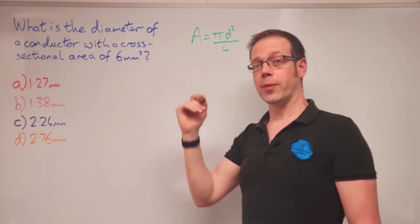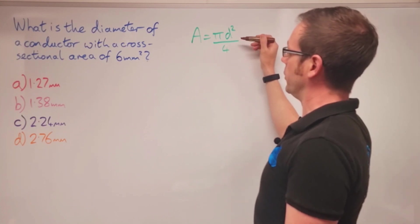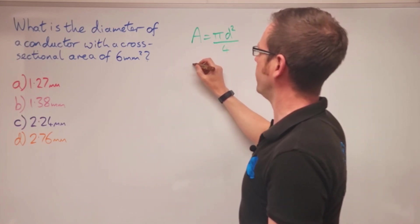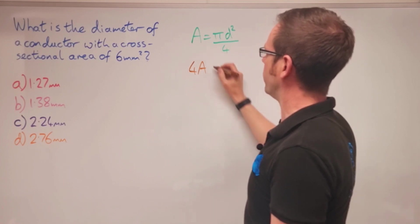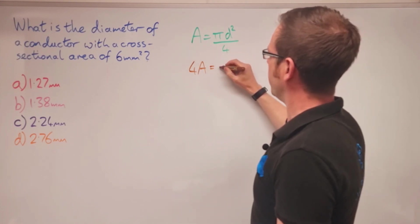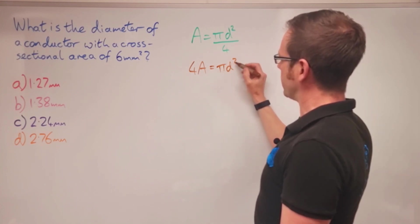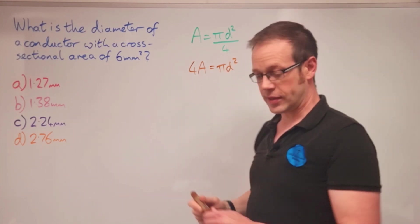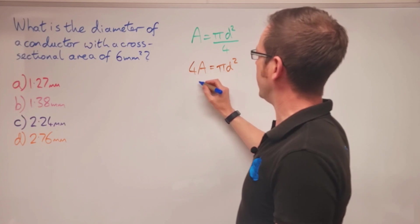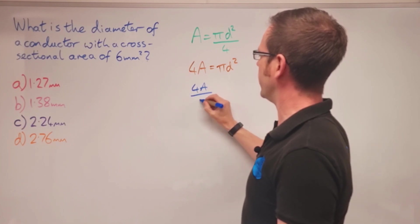Instead of dividing by four, we multiply both sides by four. We get 4A on this side, and on the other side the bottom bit cancels out, leaving us with pi d squared. The opposite of multiplying by pi is dividing by pi. If we divide both sides by pi, we end up with 4A over pi equals d squared.